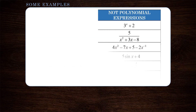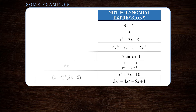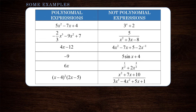Let's move on and take a look at some examples. We have a bunch of examples of expressions that are polynomials, and a bunch of expressions that are not polynomials. If we take a look at the left-hand column, we see that all of these expressions meet those requirements for being a polynomial expression — that is, the exponents are whole numbers: 2 is a whole number, 1 is a whole number, 2, 3, and so on.